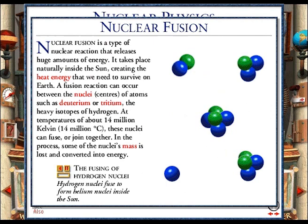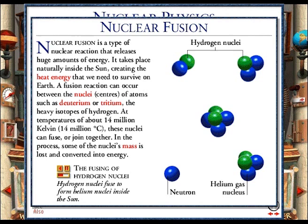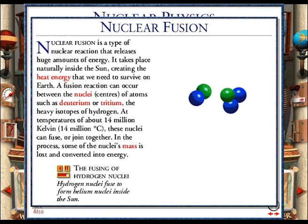In the Sun, where nuclear fusion occurs naturally, two types of hydrogen gas nuclei fuse together to form a helium gas nucleus, plus an atomic particle called a neutron. A small amount of mass is lost in the process, and is converted into vast amounts of energy. The extremely high temperatures in the Sun cause this process to repeat continuously.